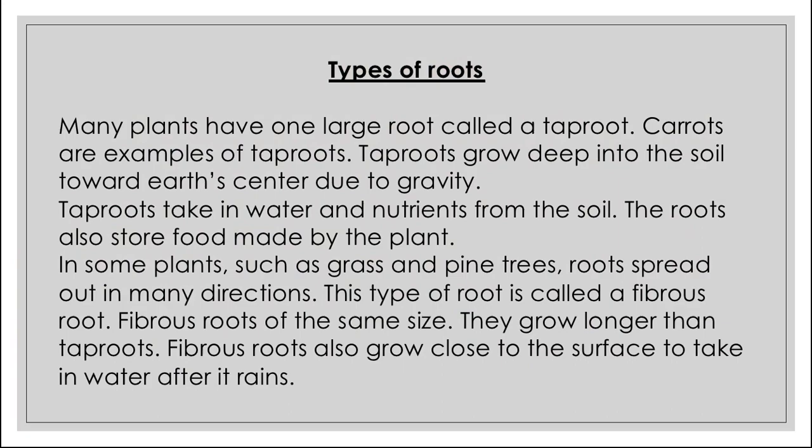This second type of root is called fibrous roots. In some plants such as grass and pine trees, roots spread out in many directions. Fibrous roots are of the same size and grow longer than taproots. Fibrous roots also grow close to the surface to take in water after it rains. These roots can sometimes be seen near the ground's surface since they grow in the upper layer of the earth.